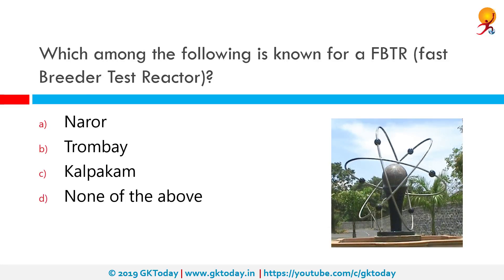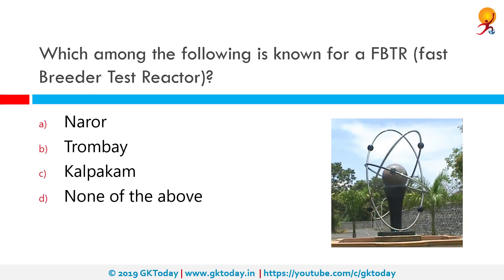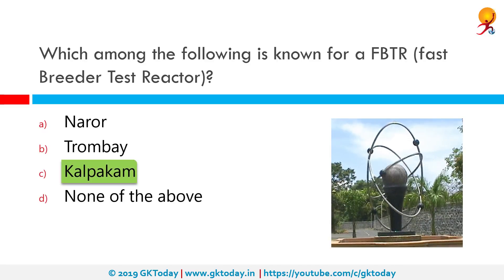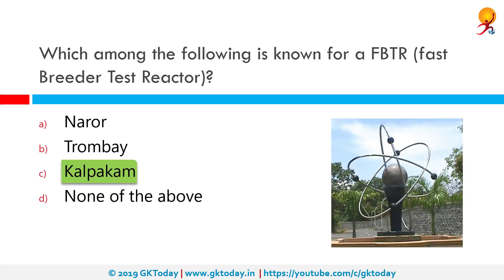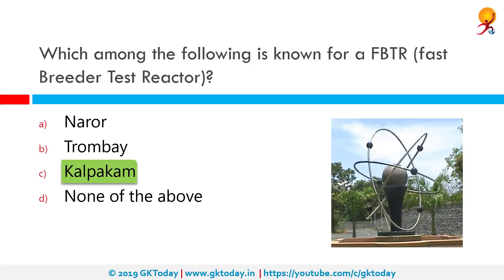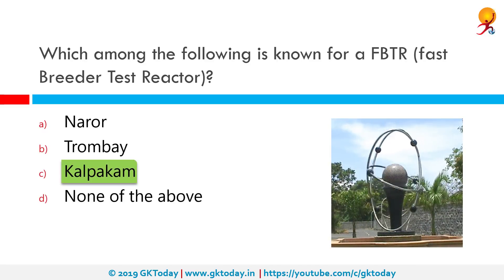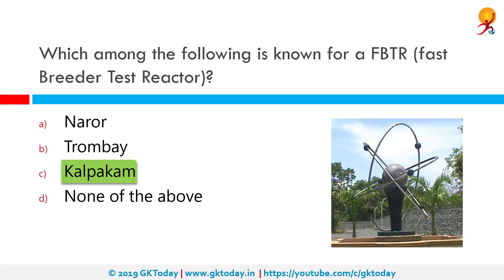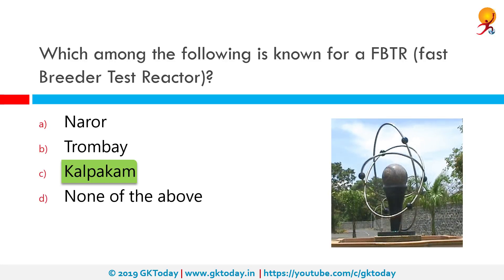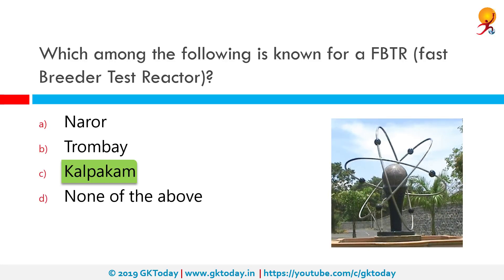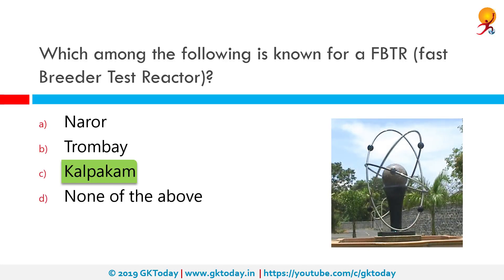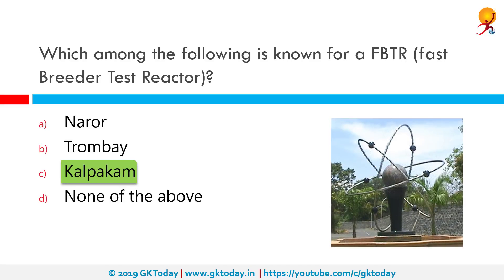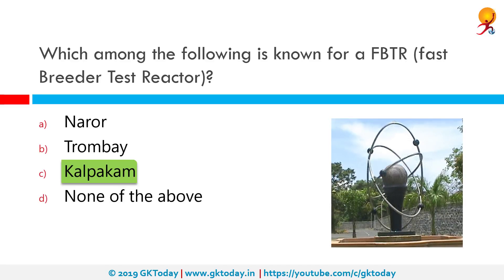Which among the following is known for FBTR — the Fast Breeder Test Reactor? The correct answer is Kalpakkam. The Fast Breeder Test Reactor is a breeder reactor located in Kalpakkam, India, jointly designed, constructed, and operated by the Indira Gandhi Centre for Atomic Research and the Bhabha Atomic Research Centre.